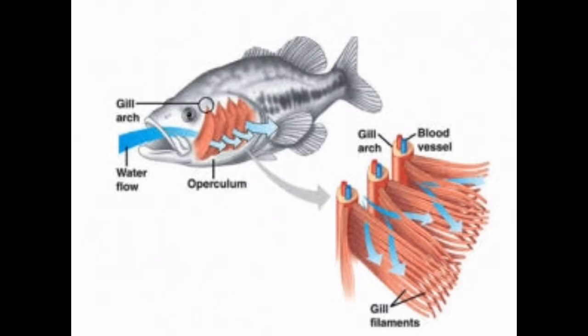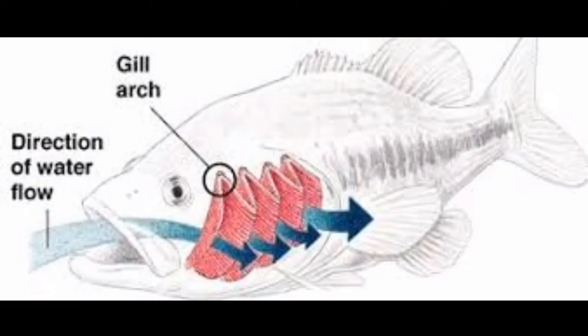Now we can see respiration in other organisms. Like human beings, cows, buffaloes, and other organisms also respire. This is the diagram of a fish. Fishes respire with the help of gills, which can be seen inside the flaps — they are the respiratory organs of fish. Water taken in through the mouth passes over the gills and the oxygen present in the water dissolves into the blood and circulates through the gill. Carbon dioxide is released into the outgoing water.